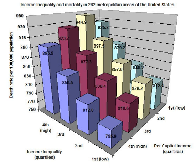Other researchers such as Richard G. Wilkinson, J. Lynch, and G. A. Kaplan have found that socioeconomic status strongly affects health even when controlling for economic resources and access to health care. Most famous for linking social status with health are the Whitehall studies, a series of studies conducted on civil servants in London. The studies found that, despite all civil servants in England having the same access to health care, there was a strong correlation between social status and health.